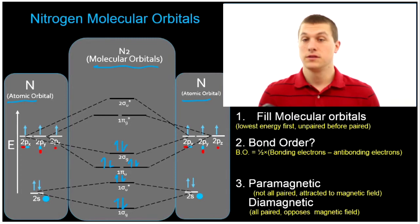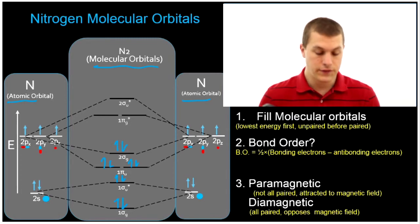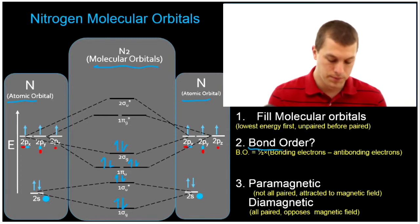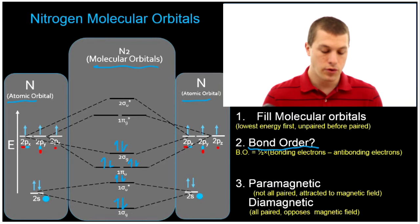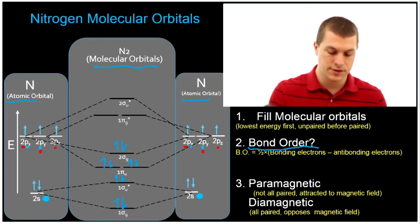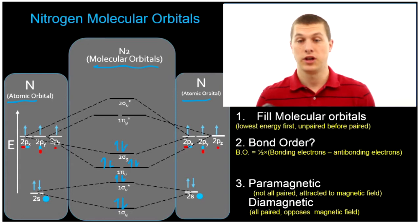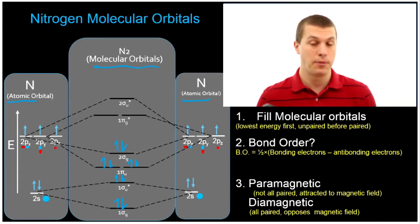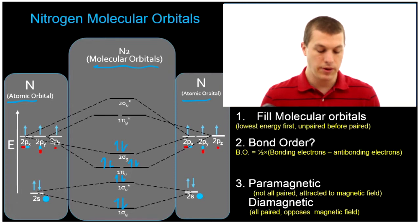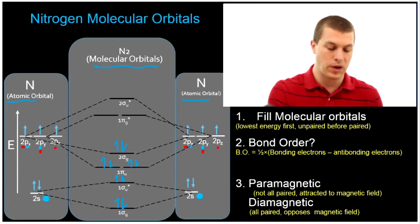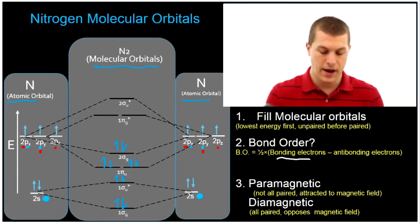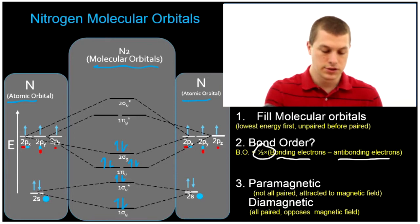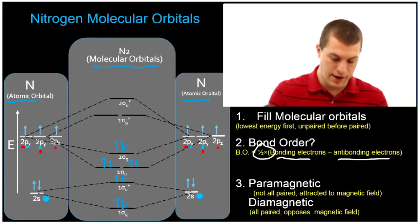So now this tells us some information about our molecule. The first thing we can calculate is bond order. Bond order is basically telling us how much does the formation of this molecular orbital result in increased stability — how much bonding results from that. The way we calculate that is we take the number of bonding electrons minus the antibonding electrons, and then we multiply that by one half. So let's go ahead and do that for nitrogen.